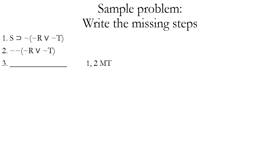Now we're going to try a different sort of problem: we're given the rule to use, and we have to write what the result looks like when we apply that rule to the given premises. Looking at lines one and two using modus tollens: line one is a conditional with a horseshoe as the main operator. Line two is the negation of the consequent, which already has a tilde on it — so we add another tilde to fit the form of modus tollens. Applying MT to lines one and two, the answer should read tilde S — the negation of the antecedent.